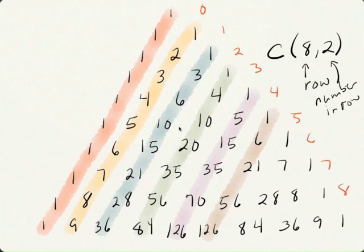And then starting from the number to the left, we go over 1, 2. So, the solution for the combination of 8, 2 is 28.